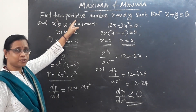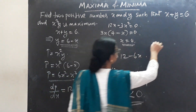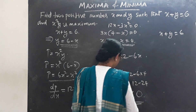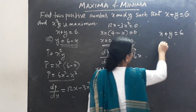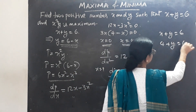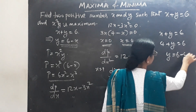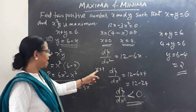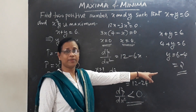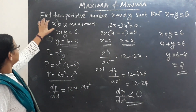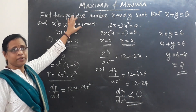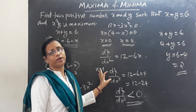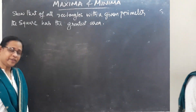Find the two positive numbers. Since x equals 4, substituting into x plus y equals 6 gives 4 plus y equals 6, so y equals 2. At the maximum point, x equals 4 and y equals 2. These are our two positive numbers: 4 and 2.